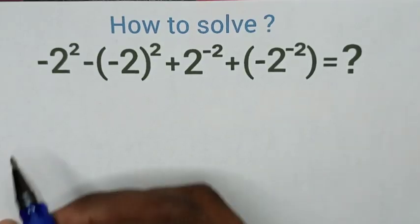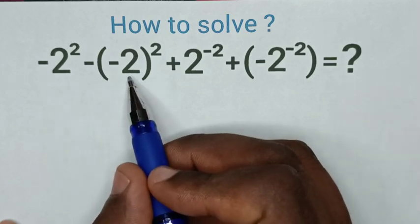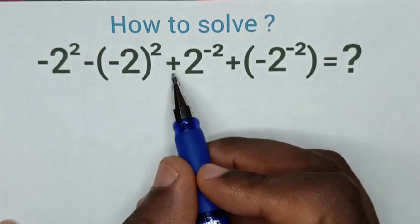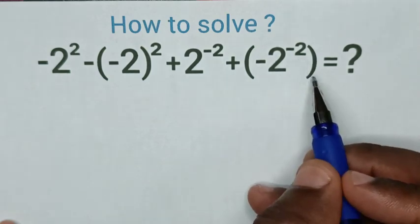Hello, how to solve -2² - (-2)² + 2^(-2) + (-2^(-2))?